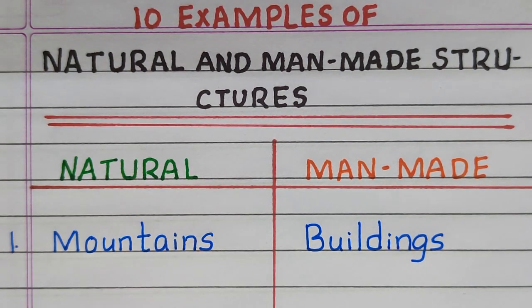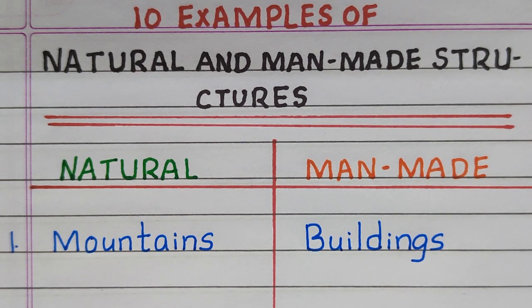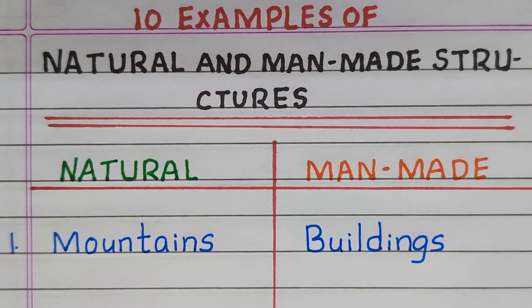The first example of a natural structure is mountains. The first example of a man-made structure is buildings.